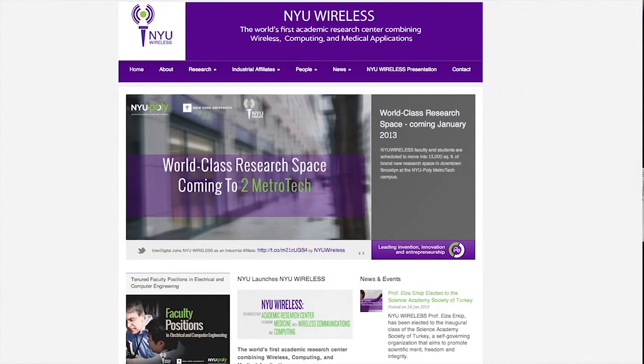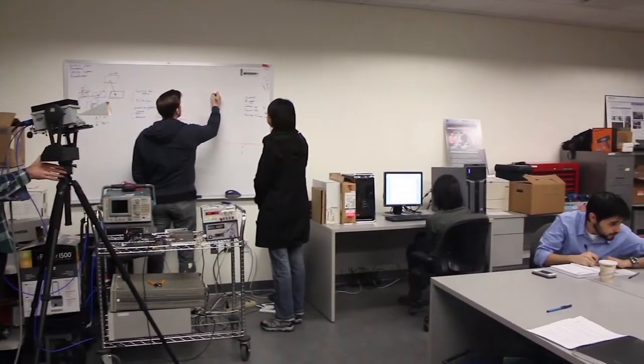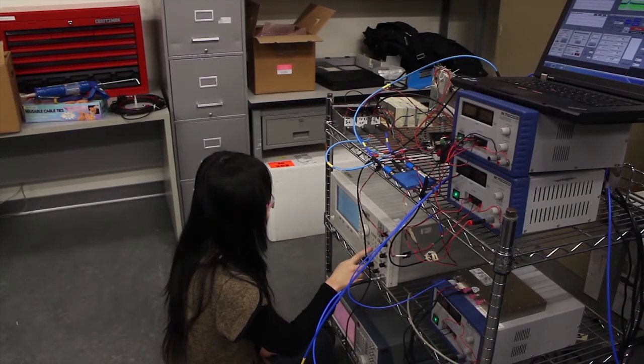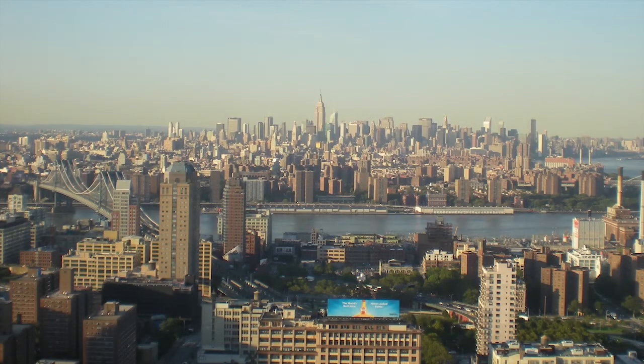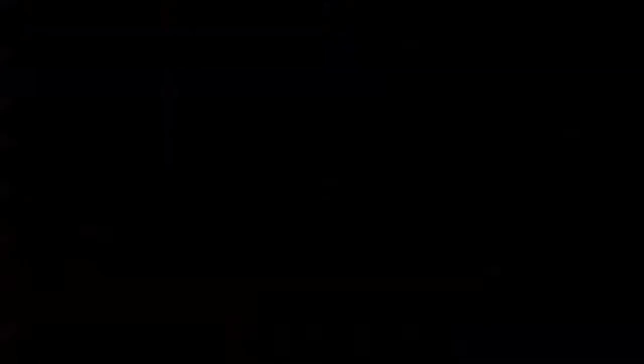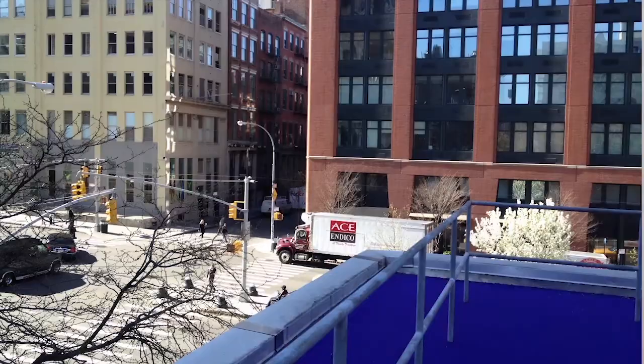NYU Wireless is one of the first academic research centers in the world to characterize the millimeter wave frequencies of 28 GHz and 38 GHz for 5G cellular, fifth generation. We've performed these measurements in one of the toughest and most densely populated areas in the world, New York City. We selected various transmitter locations on rooftops and balconies in downtown Brooklyn and Manhattan to mimic cell towers at different heights.